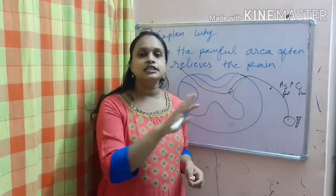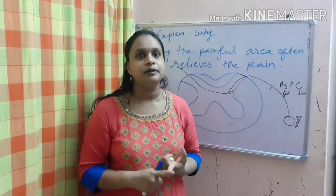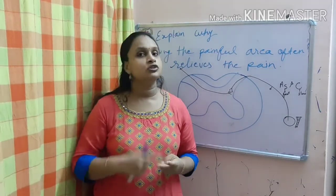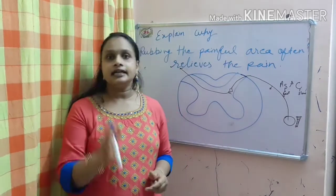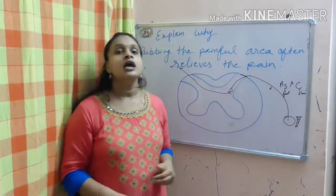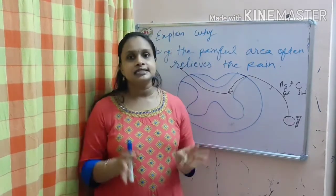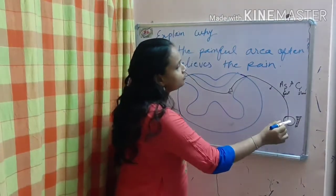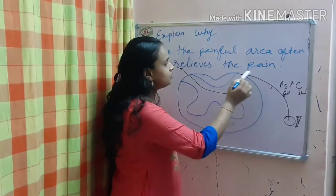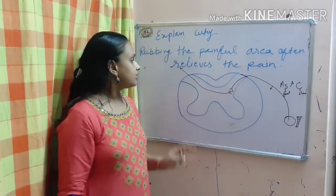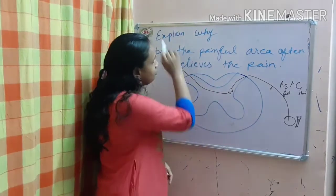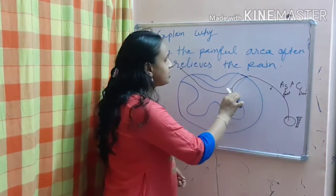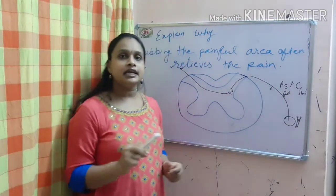So all these pain-relieving mechanisms — by touching that painful part, counter-irritant, electrical nerve stimulation, acupuncture, or acupressure — all are working by this gate control theory. What happens in the gate control theory? Pain is carried mainly in the lateral spinothalamic tract. Suppose this part of the body got injured and these pain pathways are going to the spinal cord, where it synapses with the second order neuron.